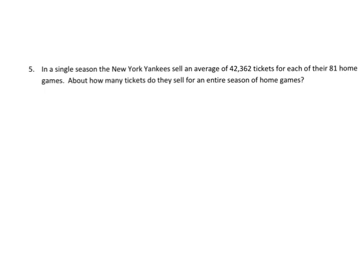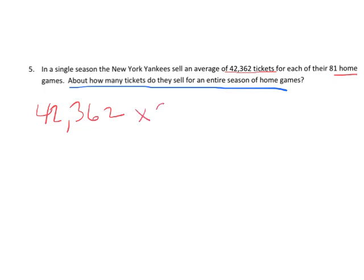Now let's try a word problem. In a single season, the New York Yankees sell an average of 42,362 tickets for each of their 81 home games. About how many tickets do they sell for the entire season? We're going to multiply these two numbers, but we want to estimate because it says 'about.' 42,362 rounds down to about 42,000, and 81 is about 80.